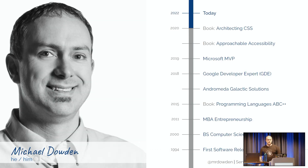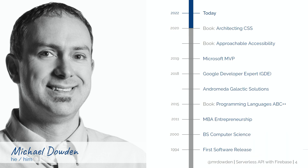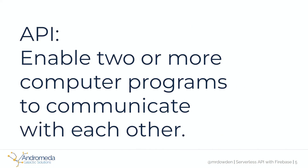My name is Michael Dowden. I operate Andromeda Galactic Solutions, which is a product development agency out of the U.S. I've been making software for almost 30 years, and I've been working with Serverless and Firebase in particular for about seven years. So this talk comes from the experience I have from doing that.